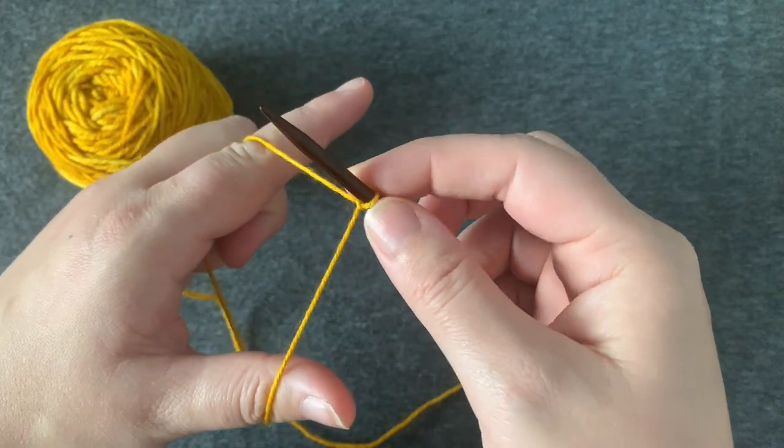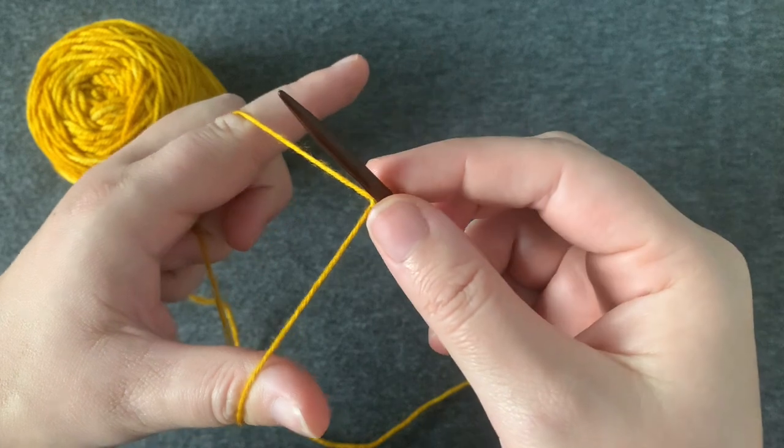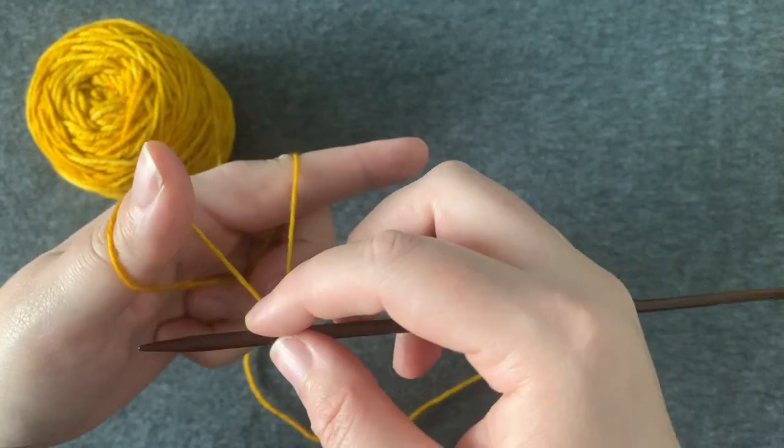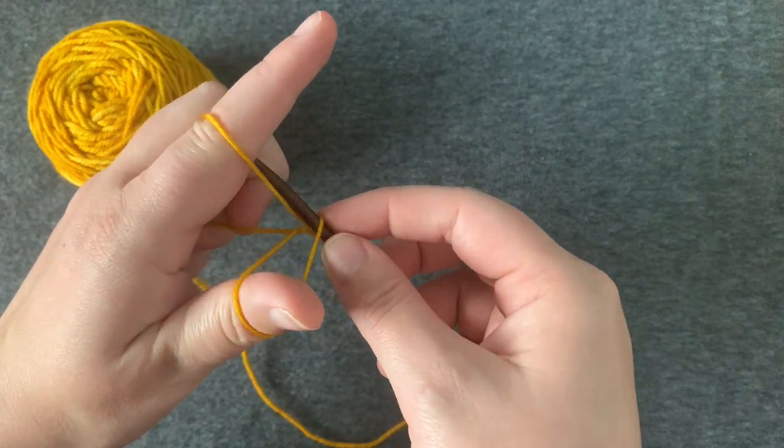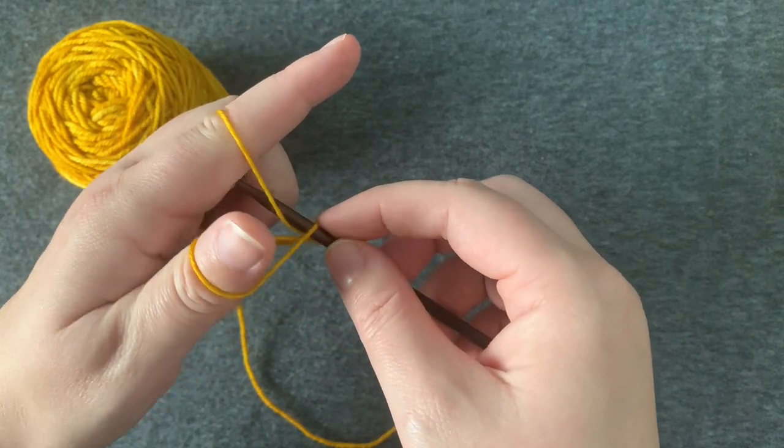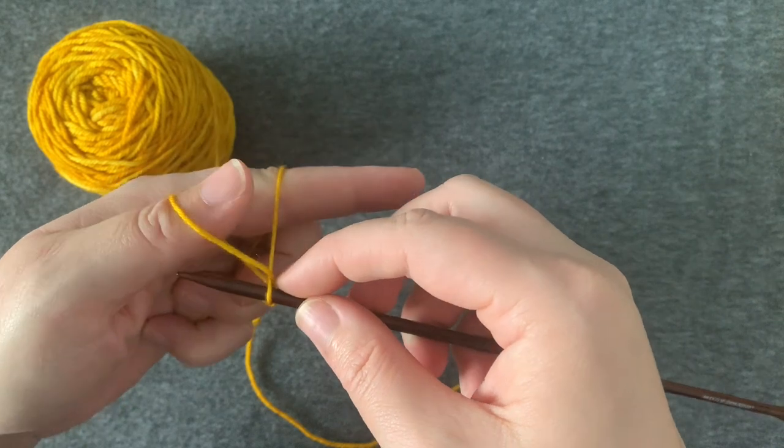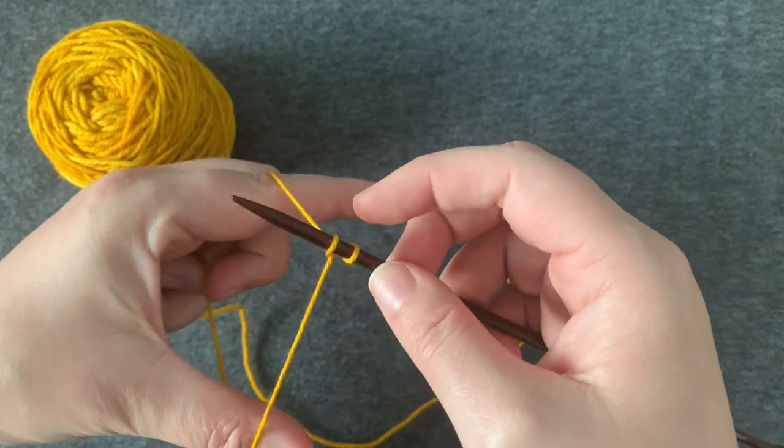So once you've got your slingshot, you're going to take your needle and you're going to go under the one on your thumb, over the one on your index finger, and through. Then pull that tight.